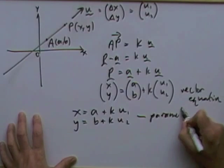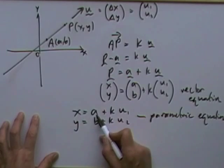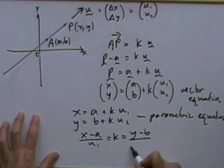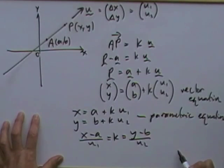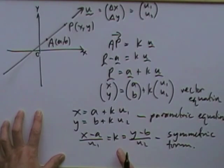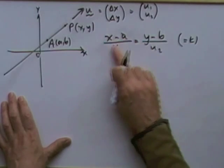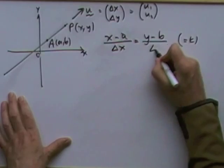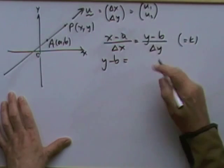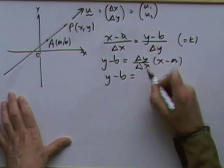If you divide out so you're just left with k: rearranging x gives (x minus a) over u1, and rearranging y gives (y minus b) over u2. Setting these equal gives the symmetric form. Replacing u1 and u2 by the differences Δx and Δy, and rearranging, you get y minus b equals (Δy/Δx) times (x minus a), where Δy/Δx is the gradient.